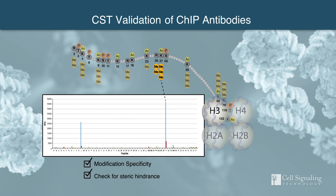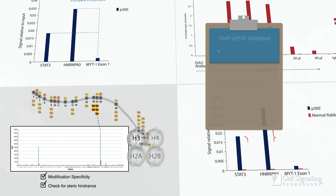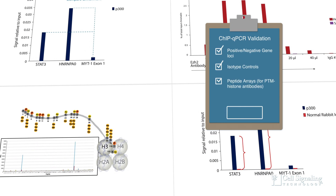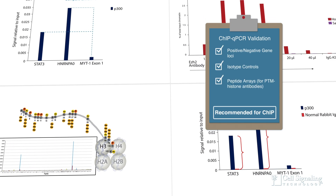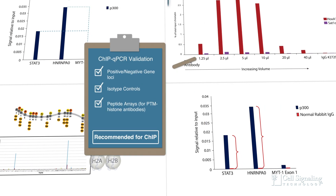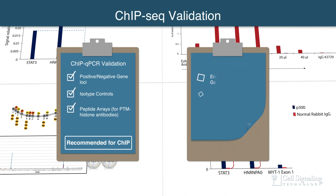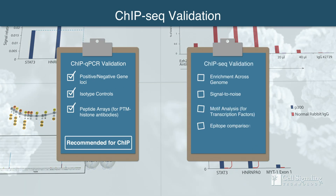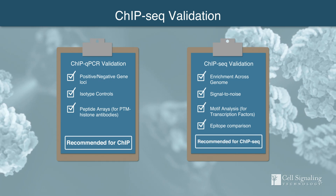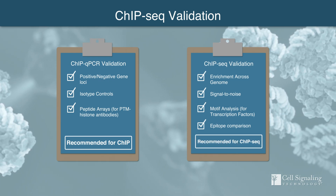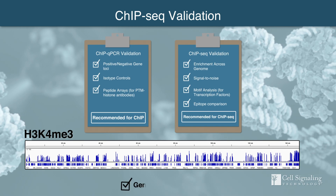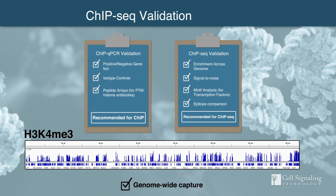Cell Signaling Technology recommends an antibody for use in ChIP only when it meets these validation criteria for ChIP-qPCR. For an antibody to be recommended for ChIP-seq, the validation standards are even higher, because ChIP-seq requires more extensive capture of the target protein from a large number of loci across the genome.